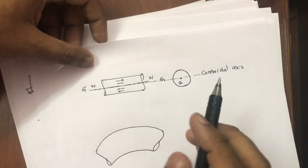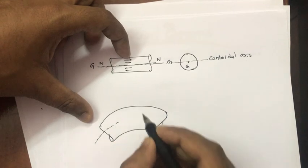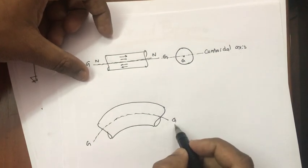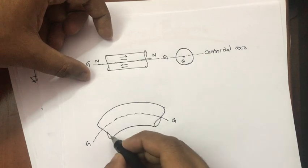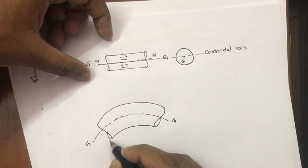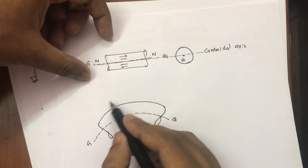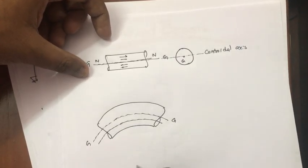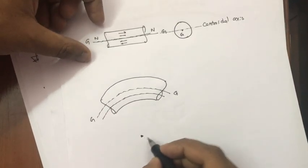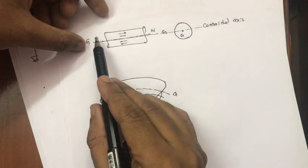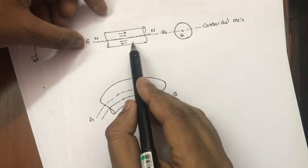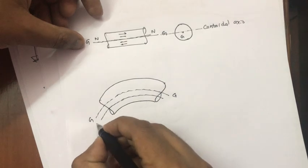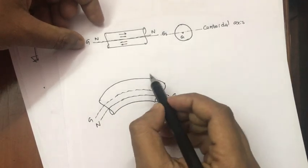In a straight beam, the center of gravity and centroidal axis coincide. For a curved beam, when we apply a bending load, the stress concentration at the inner fiber will be more compared to the outer fiber. So the neutral axis deviates towards the center of curvature. In a straight beam, G and N axes coincide, but in a curved beam when we apply the bending moment, stress will be more at the inner fiber.